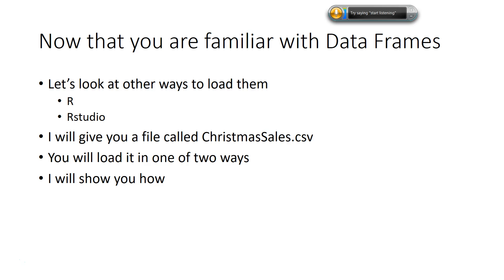First, we're going to load the data. You're familiar with DataFrames from the DataCamp chapters. We're going to create a DataFrame from a file called ChristmasSales.csv — a simple file of 50 records with two columns: visits, the number of times a customer visited a store in the last year, and the amount of sales that customer purchased between December 1st and Christmas time. We want to see if there's a relationship between those two variables.